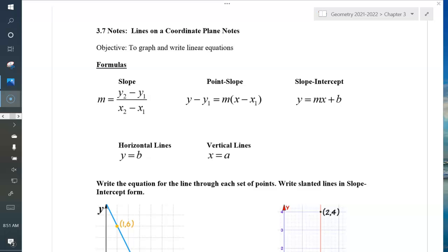Just to remind you of some formulas from algebra 1, slope is y2 minus y1 over x2 minus x1, and that means that you know two coordinates, x1, y1, and x2, y2. If you have those two coordinates, you can calculate your slope.